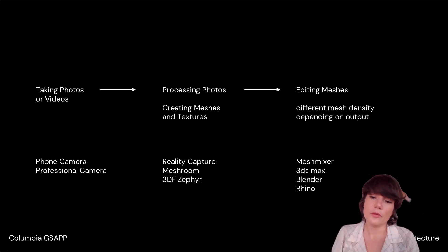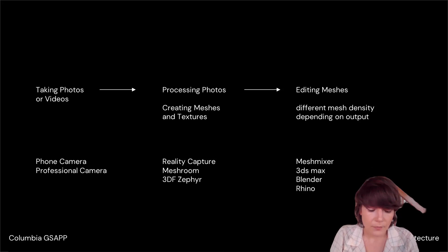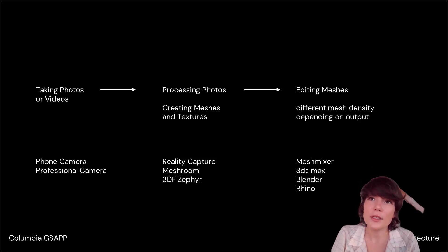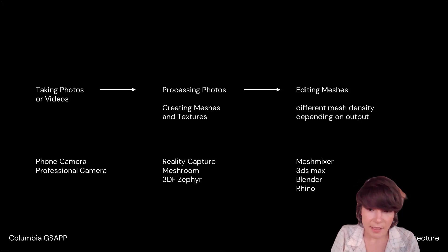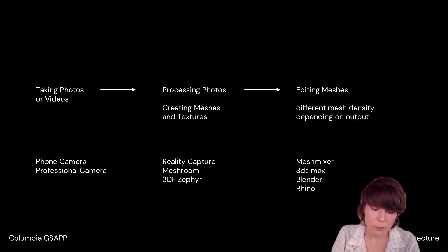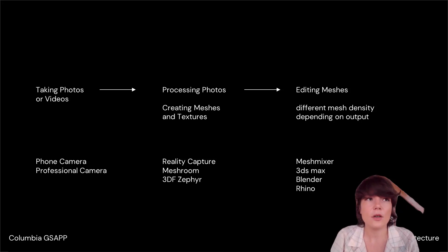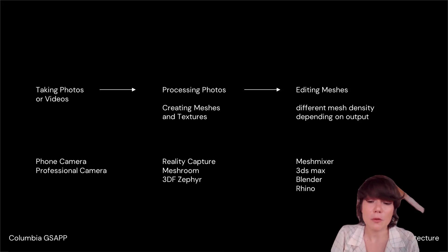In most cases, you just need your phone to get started. It has a number of advantages — you have it with you all the time, so you can spontaneously decide to scan something. The quality of most phones is so good that you'll get a very decent scan, especially with good lighting. File sizes won't be as big as with professional cameras. If you do have a professional camera, I recommend using it. Higher quality results are achievable with a DSLR or high-end digital camera, so it really depends on your use case.